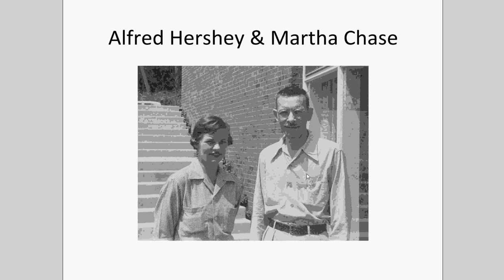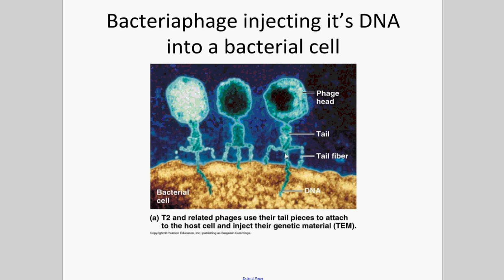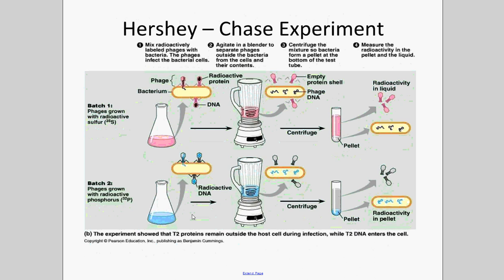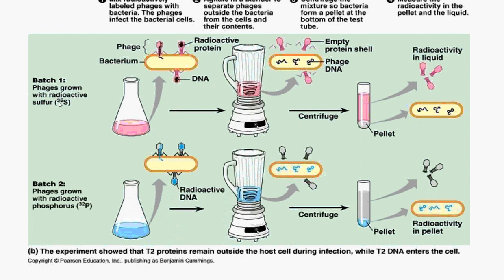Alfred Hershey and Martha Chase — the Hershey-Chase experiment — definitively proved that DNA is the hereditary information. They did their experiments with viruses called bacteriophages, which are viruses that attack bacteria exclusively and are made of two things: protein and DNA. Two radioactive markers were used: radioactive sulfur, which is an important component of proteins, found in certain amino acids and important for disulfide bridges.